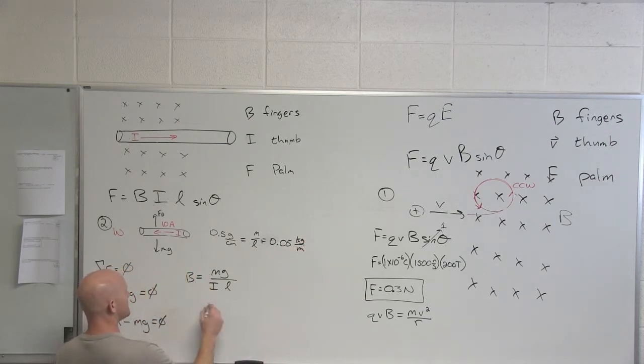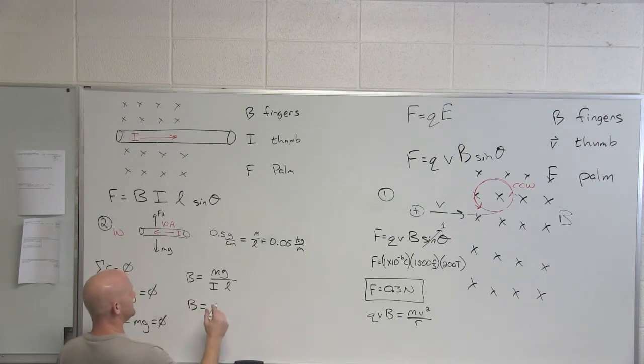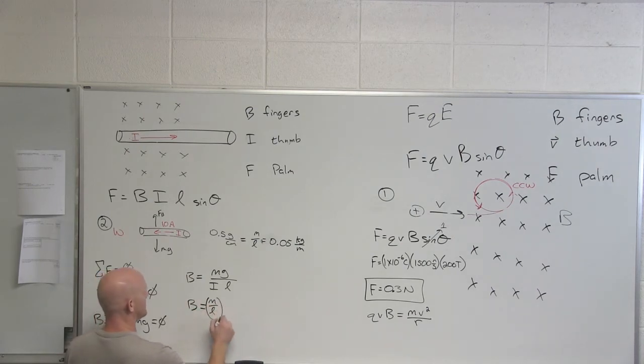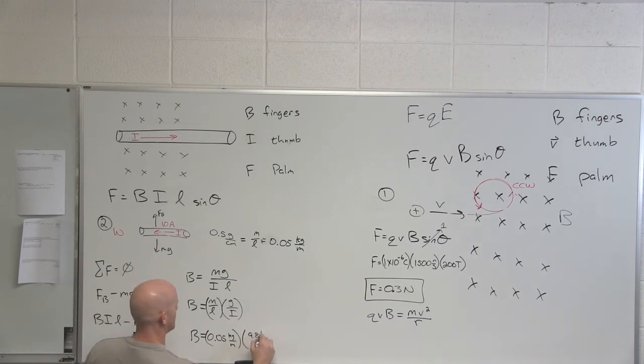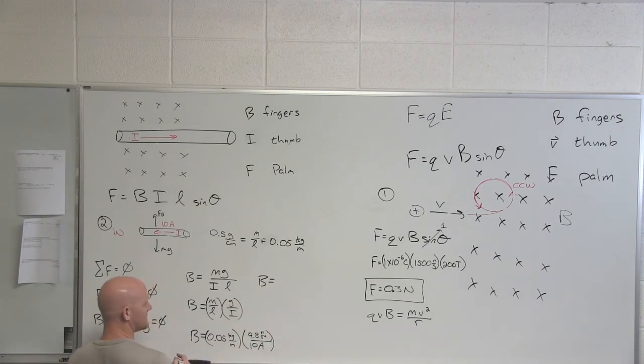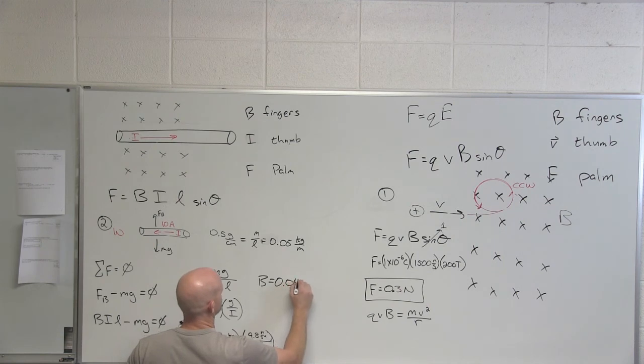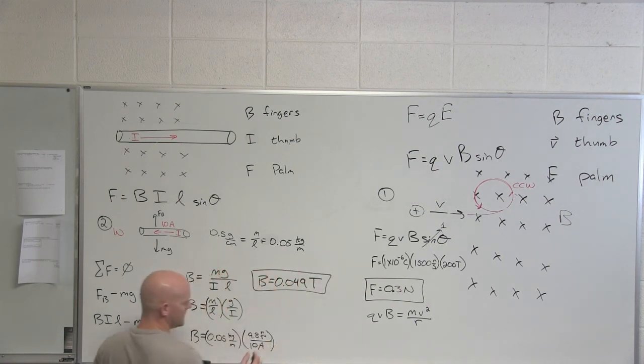Cool. So if we go to solve for this lovely magnetic field. I'll rearrange this a little bit. M over L times G over I. And M over L is the 0.05 kilograms per meter. Gravity, 9.8 meters per second squared. And the current of 10 amps. Can somebody get me a magnetic field? Would it be 0.049? Cool. If you notice, multiplying by 9.8 over 10 is going to make it just a teeny bit tinier than 0.05.